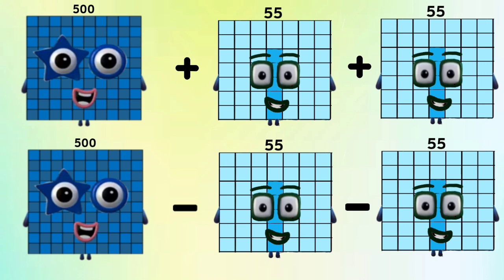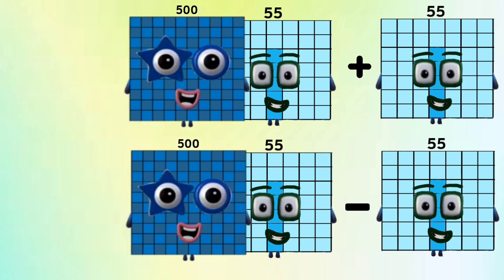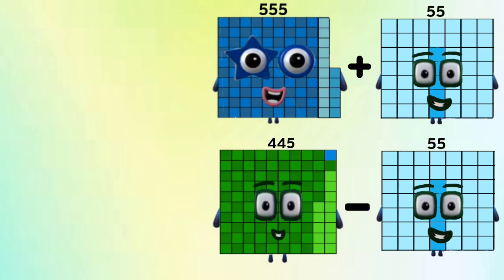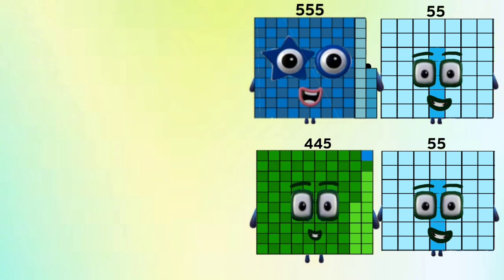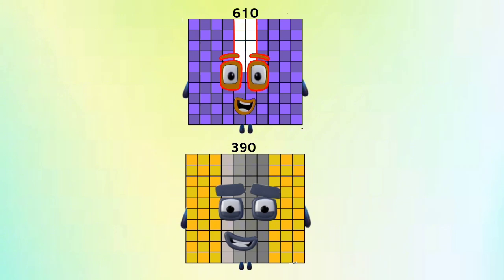Number Blocks 500 plus and minus Number Blocks 55 equals Number Blocks 555 and 445. Number Blocks 500 plus Number Blocks 55 and Number Blocks 445 minus Number Blocks 55 equals Number Blocks 610 and 390.